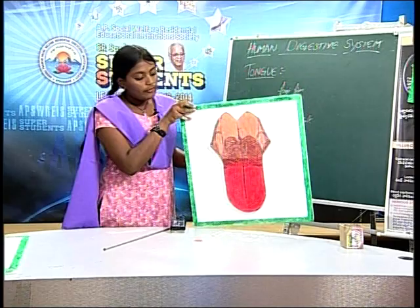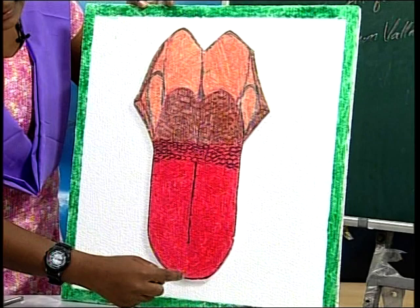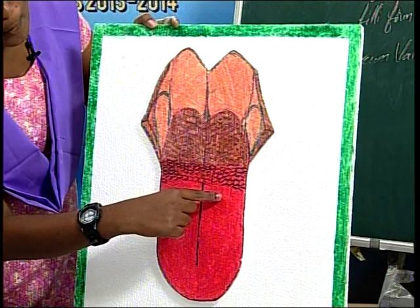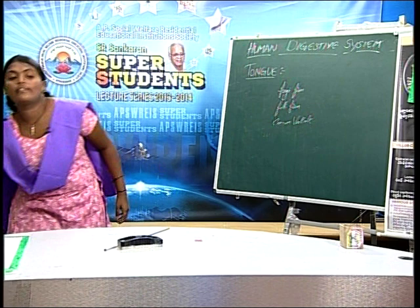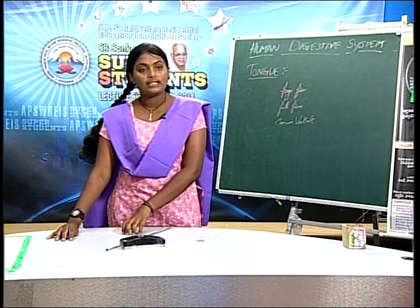Fungiform papillae are present at the anterior margin and tip of the tongue. Filiform papillae are present at the surface of the tongue, and circumvallate papillae are present at the posterior surface of the tongue. The tongue acts as a universal food mixer. It is used for mixing saliva with food, taste detection, deglutition and speech.